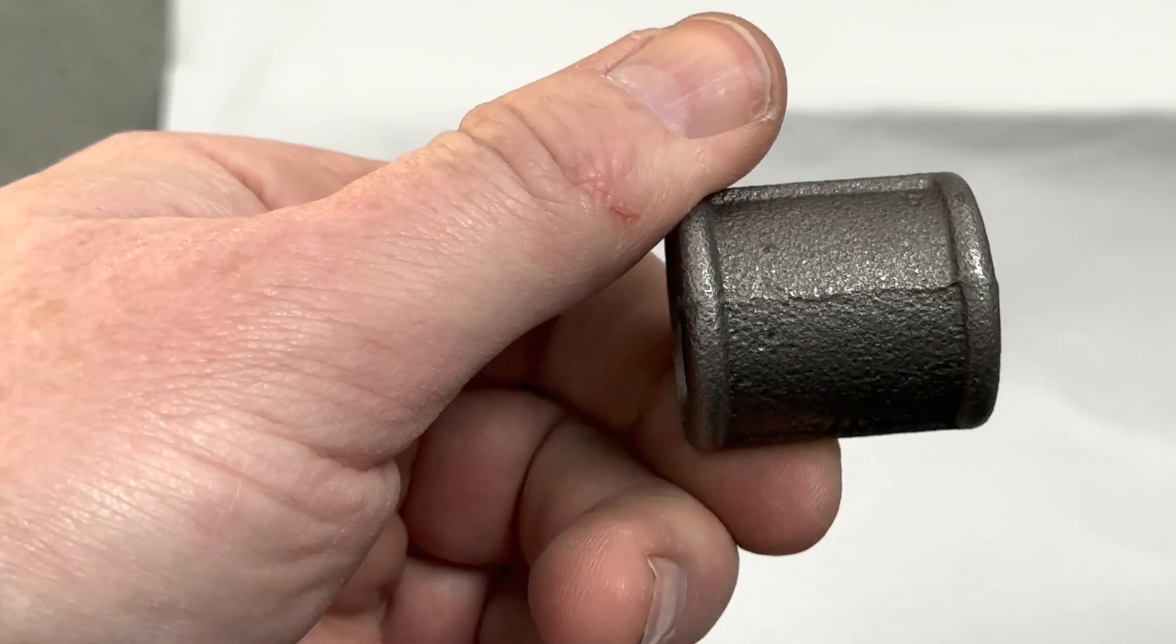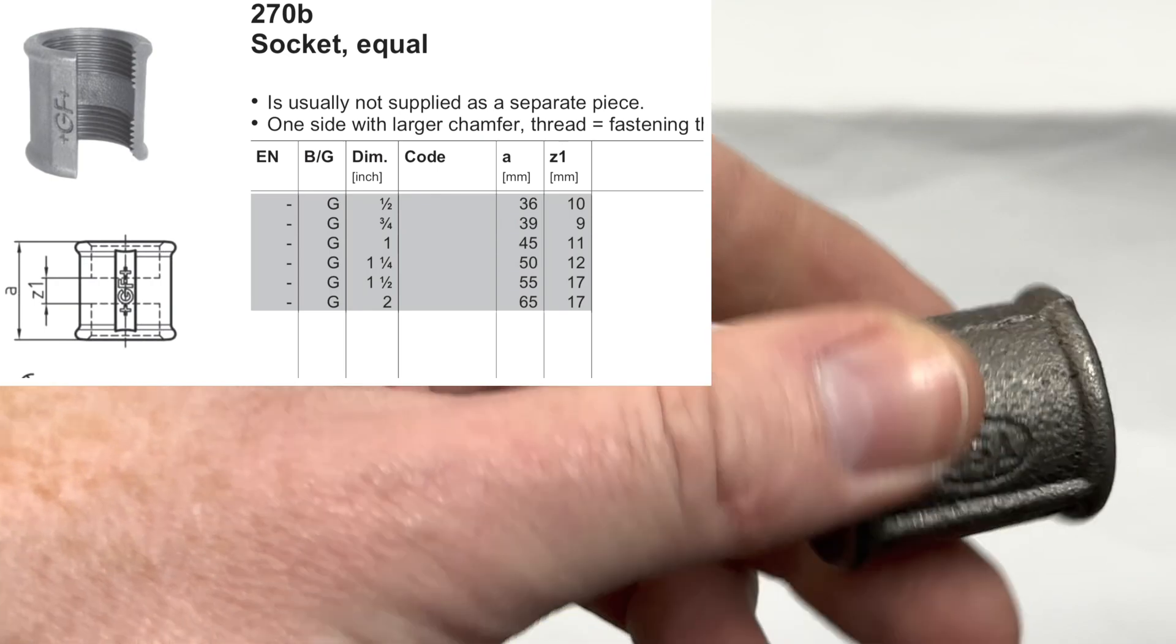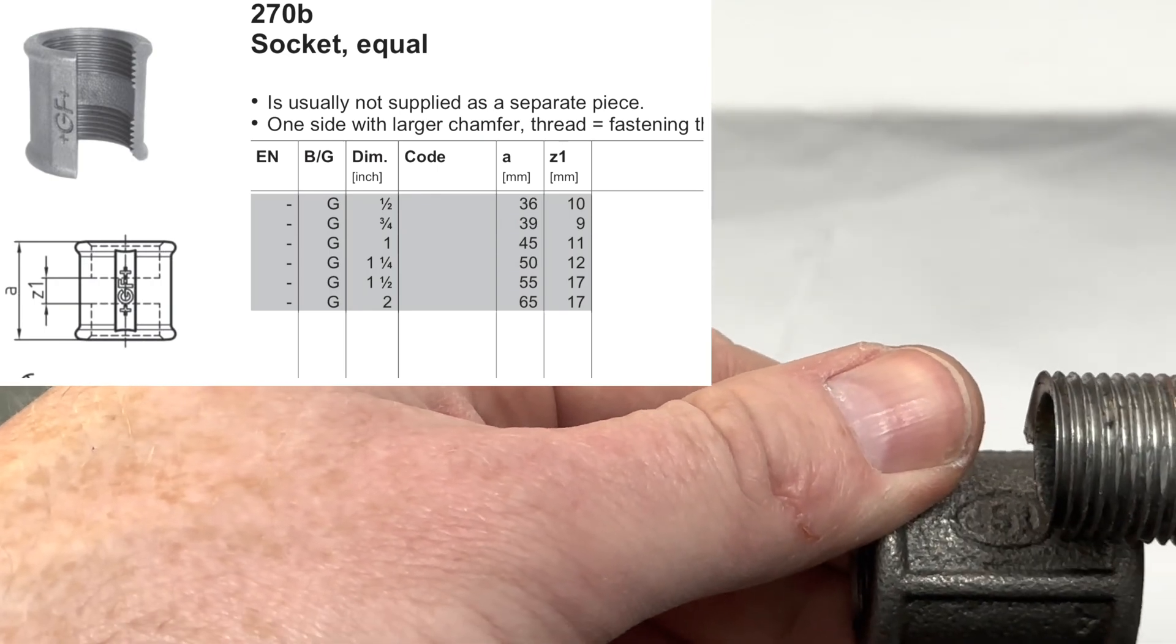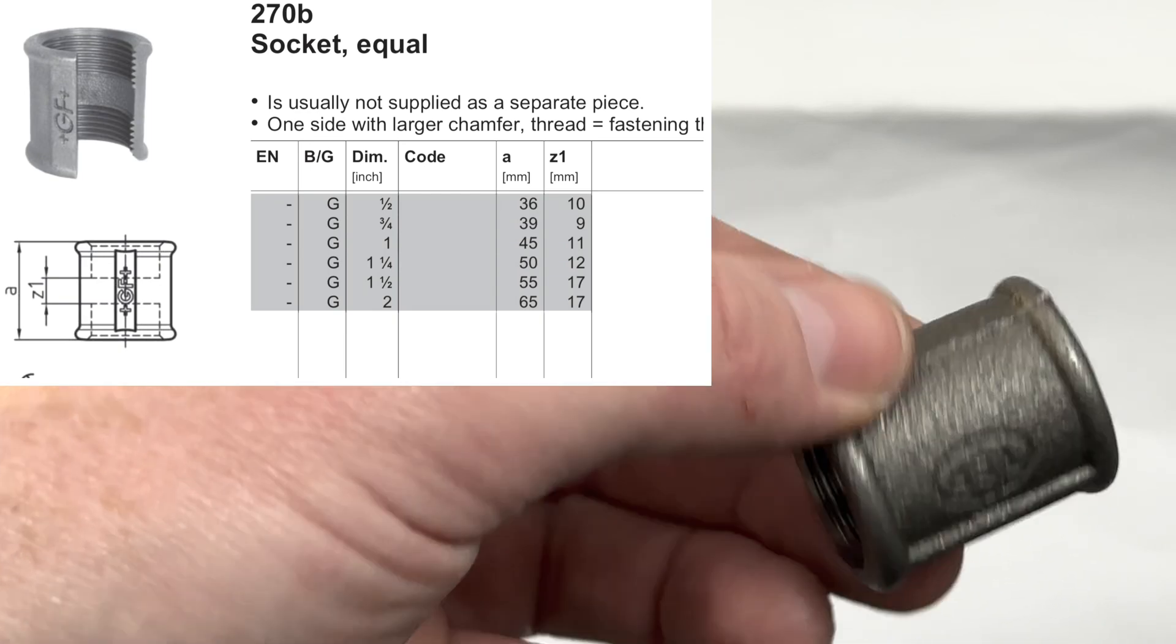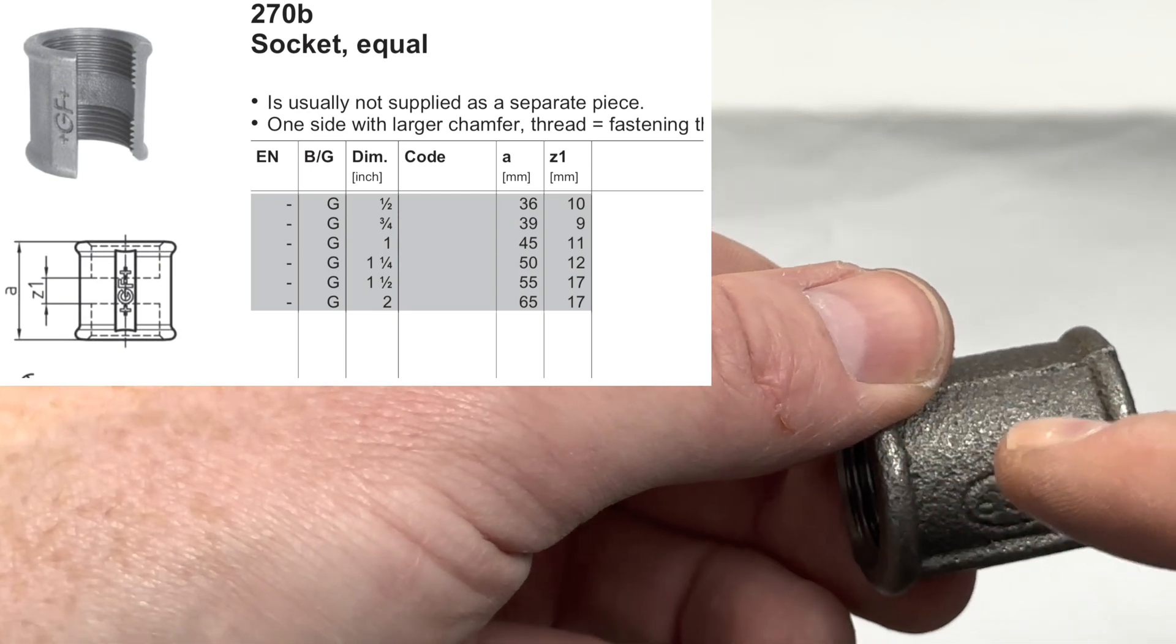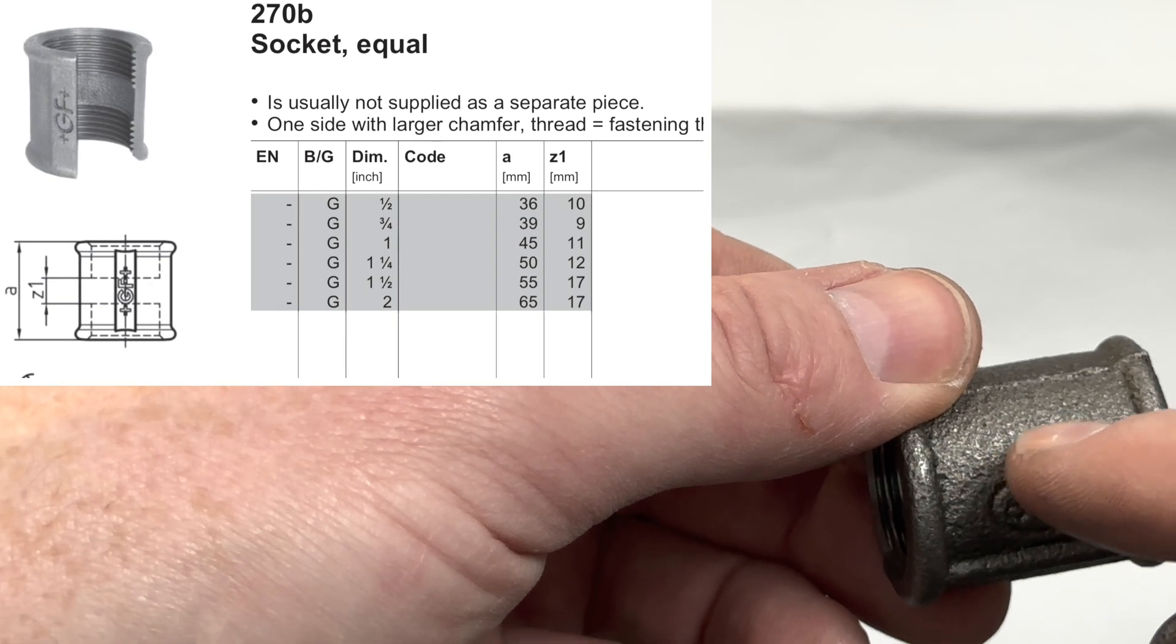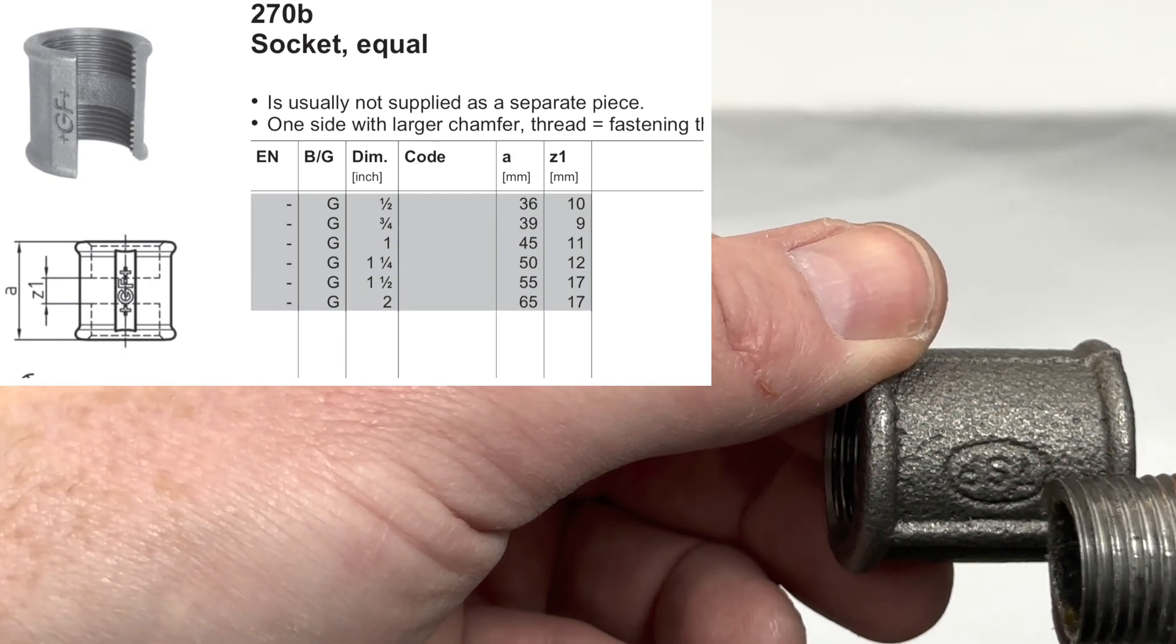Don't be deceived by sockets. The pipes don't meet in the middle. There still is a Z dimension. If you look at the technical charts, we can see that, for example, for this half-inch socket, there's a 10mm Z dimension in the middle.